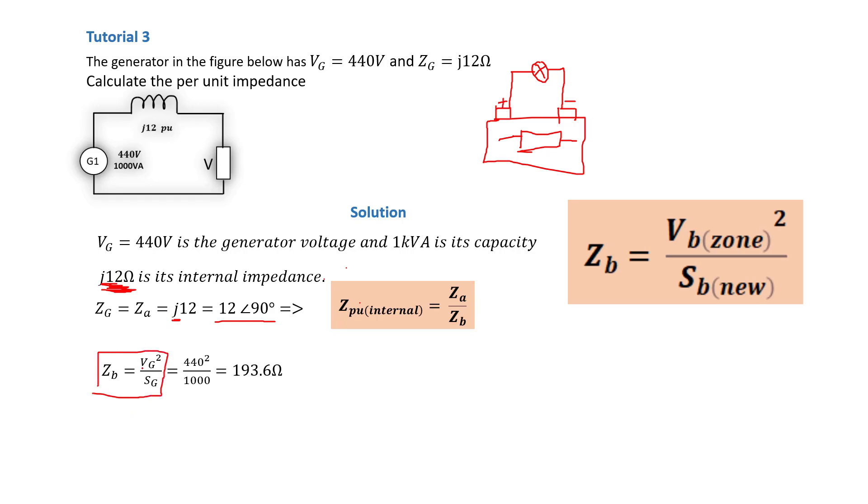So in this case, our zone voltage is the voltage of the generator, which we then square, and our S_G, which is the S of the generator, is 1000 volt-amperes. So we replace in the formula and we get a Z_B of 193.6 ohms.